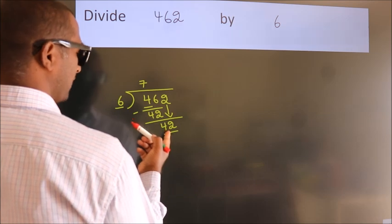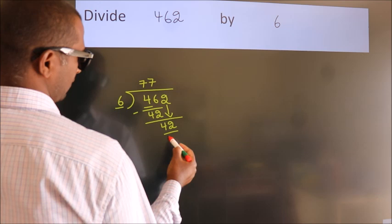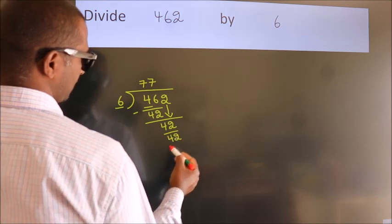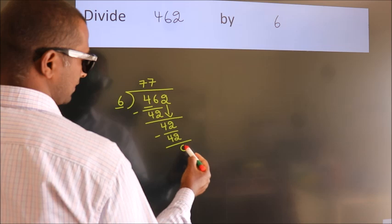When do we get 42? In 6 table, 6 times 7 equals 42. Now we subtract. We get 0.